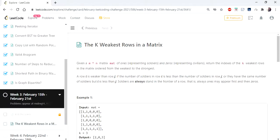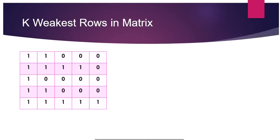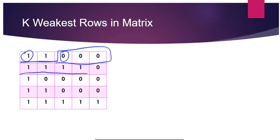Hello everyone. Today we are going to see another interesting problem: the K Weakest Rows in a Matrix. The input given is a two-dimensional array and we have to return the K number of weakest rows in a given matrix. Let's understand this problem with an example.